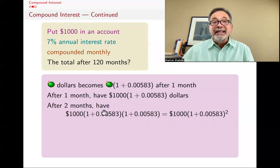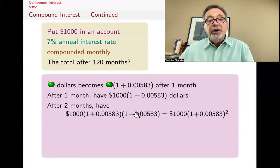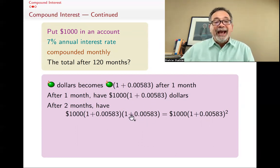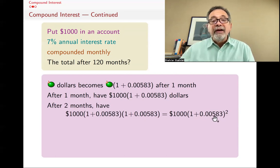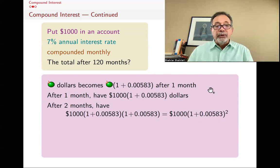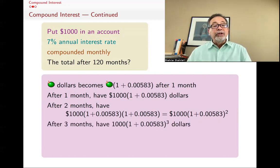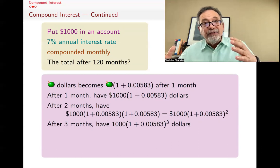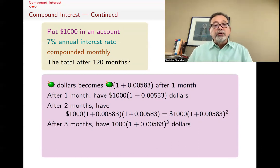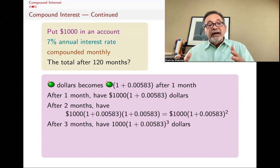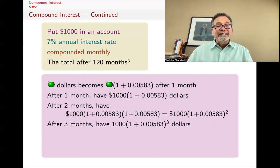You multiply that by another 1.00583, and you get 1,000 times 1.00583 squared. If you need practice with exponents, watch my videos on exponents. And then what happens after three months? Well, you have to multiply what you had at the end of two months again by another 1 plus 0.00583. So you get 1,000 times 1 plus 0.00583 cubed dollars. And this continues.